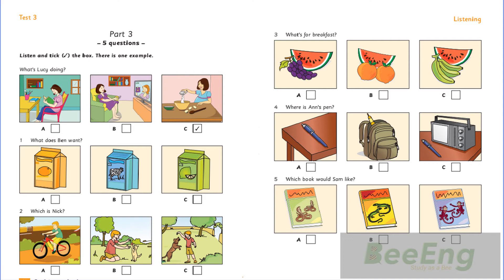3. Can I have fruit for breakfast, please? Yes. We've got grapes, oranges, bananas, and watermelon. Can I have grapes and watermelon, please? Yes. Here you are.